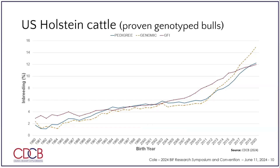Now I'll talk about why new inbreeding matters more than old inbreeding. This shows proven genotype Holstein bulls' inbreeding from CDCB. The solid gold line is pedigree inbreeding, the broken gold line is genomic inbreeding, and there's also genomic future inbreeding. They all follow basically the same trend. You can see that over time there are not huge increases — but then we implement genomic selection, which cuts the generation interval in half, meaning we're going a lot faster. Now we're making decisions about young bulls when they're two months old based on their genomic evaluation.